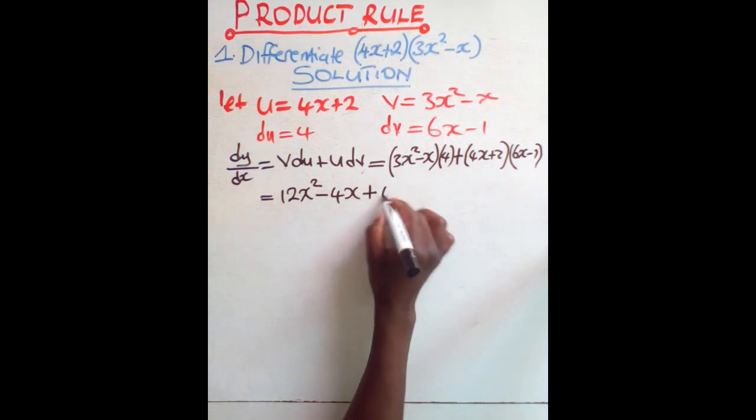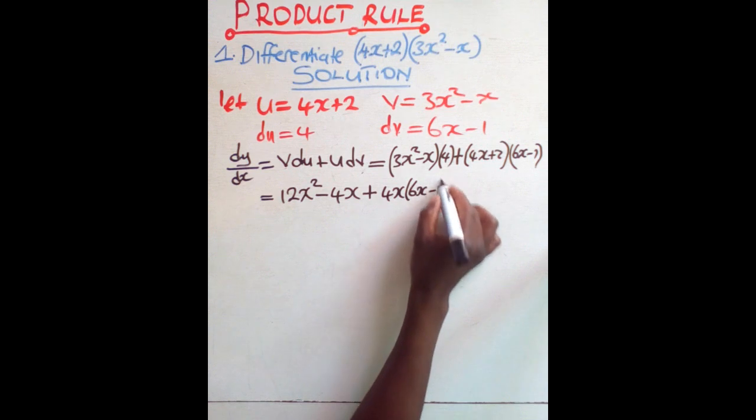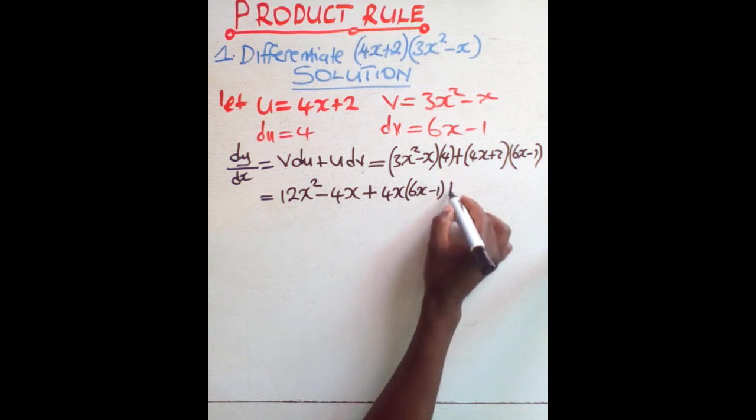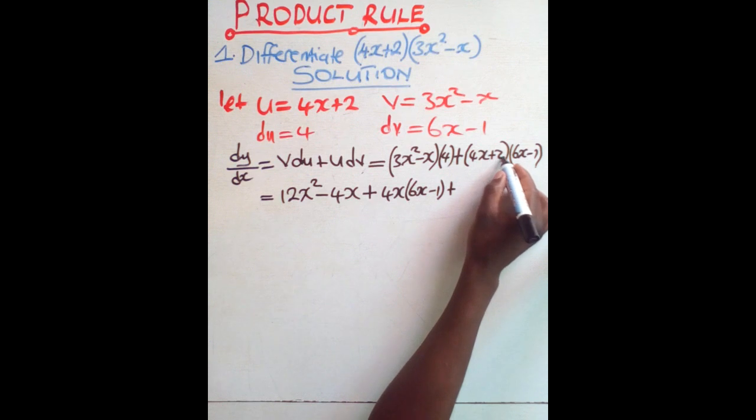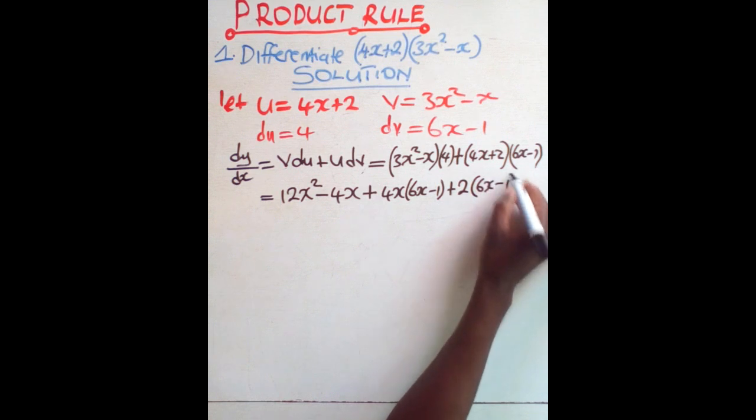For this side now, what are we supposed to do? It's more like we are saying plus this 4x, 4x open brackets, 6x minus 1, then plus this is a 2, so 2 also times 6x minus 1.